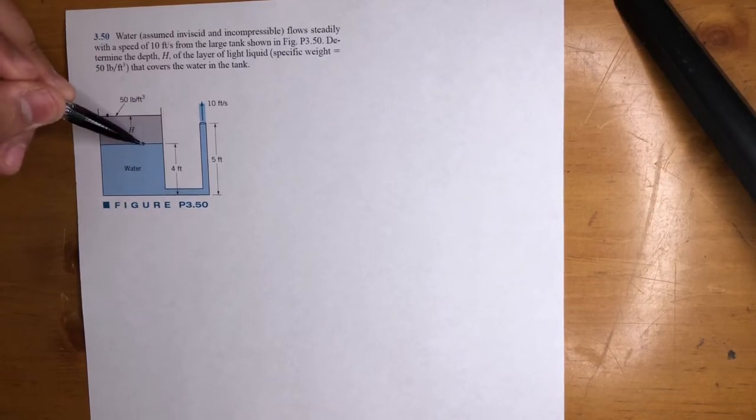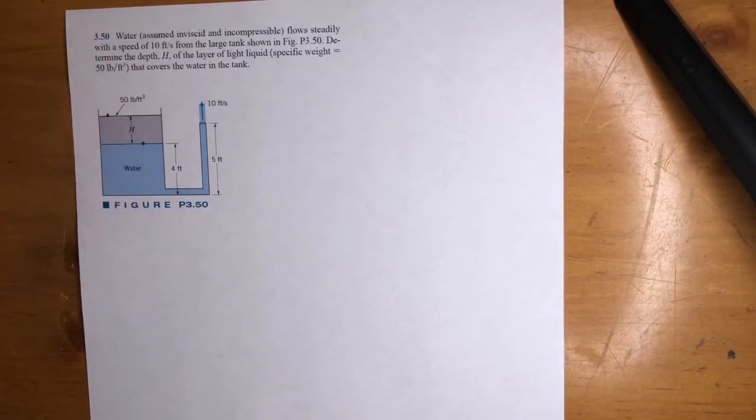And you might think, well, it's zero, right? But that's not really the case here because you have this liquid up top. So if there was no liquid, yeah, this would be zero. This pressure right here is zero. So that means we know this pressure here is zero.